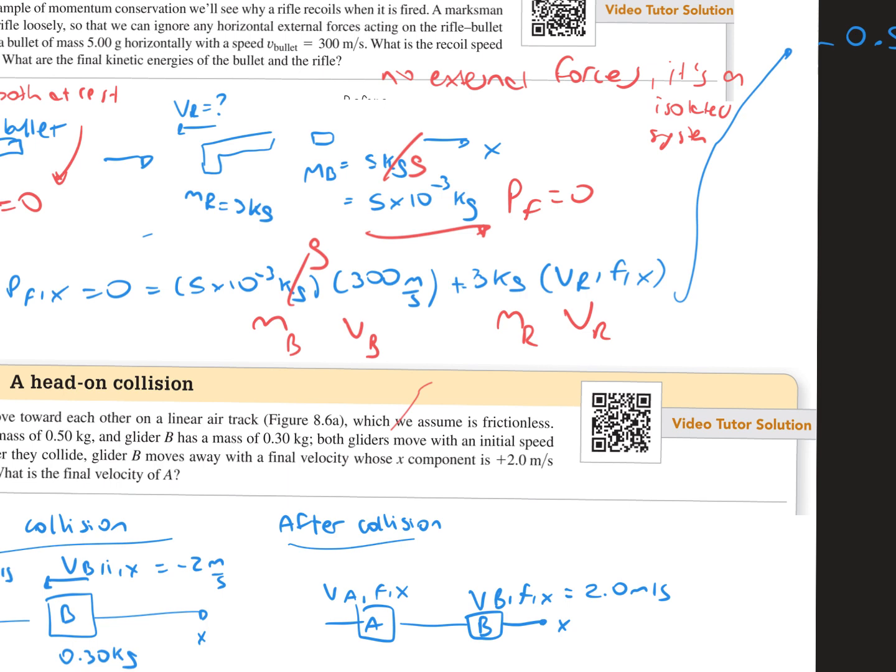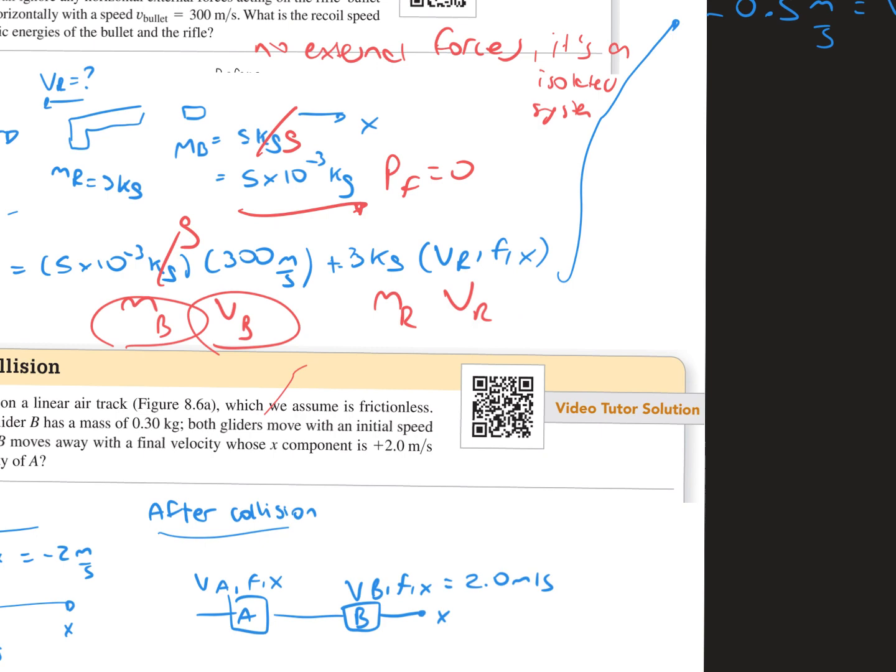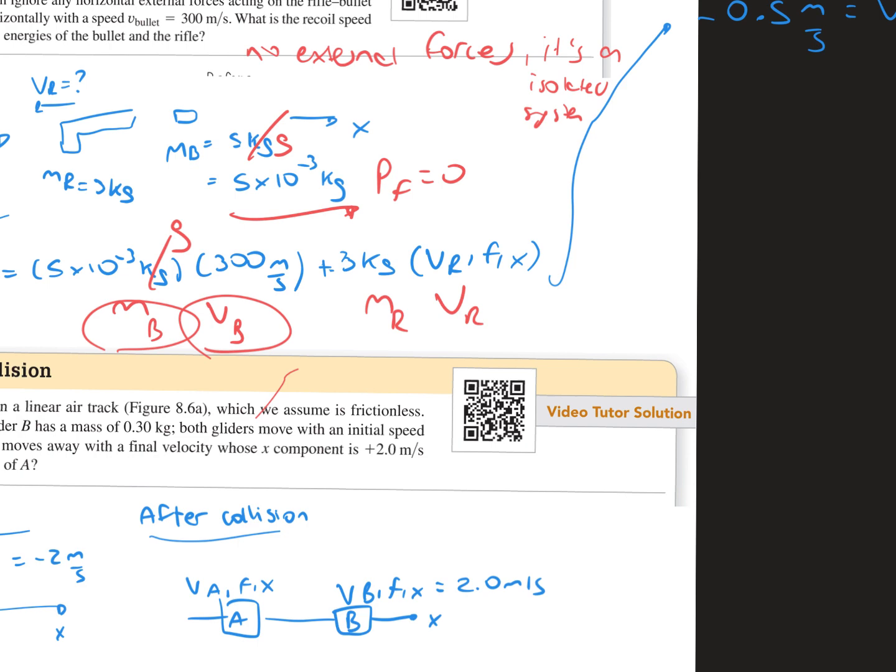The mass of the bullet times the velocity of the bullet is 5 times 10 to the negative third kilograms times the velocity of 300 meters per second. Then we add up the mass of the rifle times the velocity, but we don't know the velocity, so we have to solve for the final velocity in the x direction of the rifle.